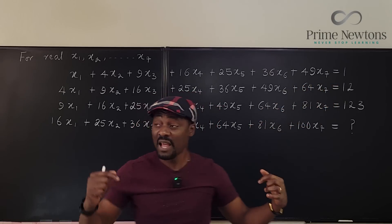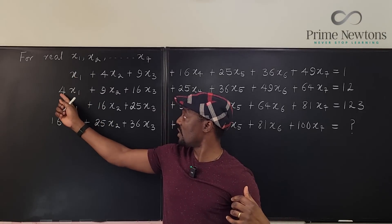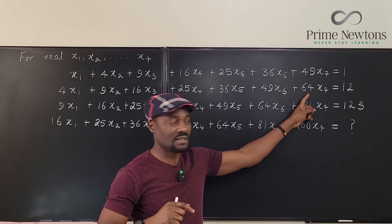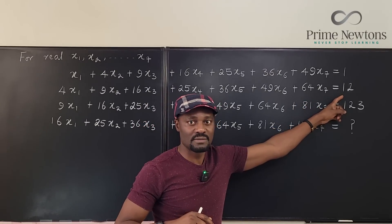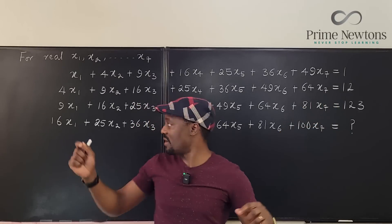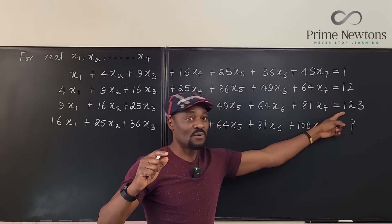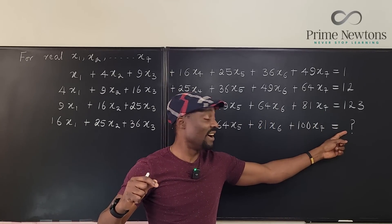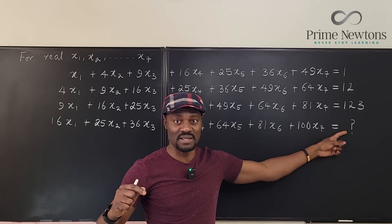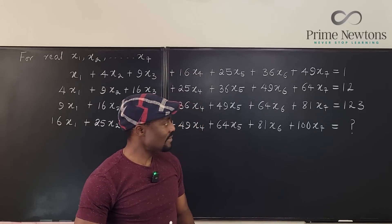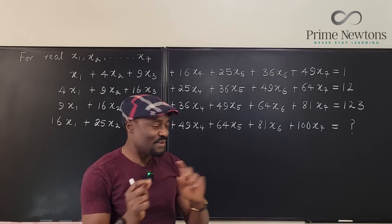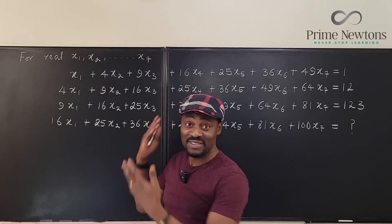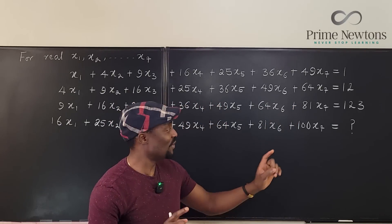If you repeat the same thing but instead of starting from 1, you're starting from the next perfect square, which is 4, all the way to 64x7 — it's 12. You do the same thing starting from 9, you're going to get 123. Starting from 16, that's what they want us to find. But if you look carefully at the answers, even without thinking deeply, you can almost predict what the answer is going to be.